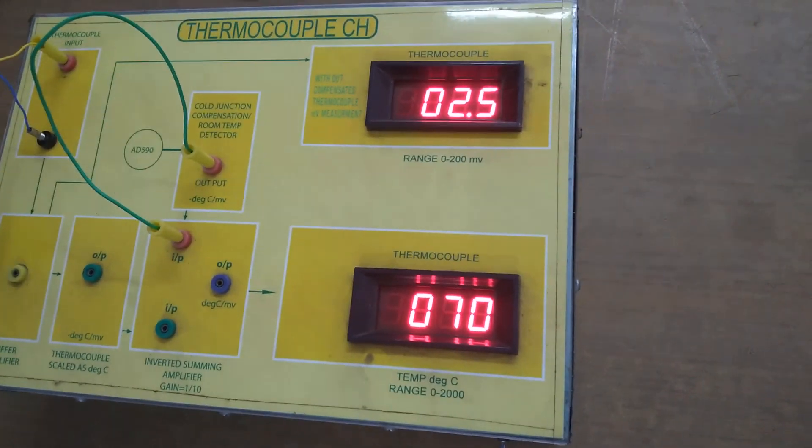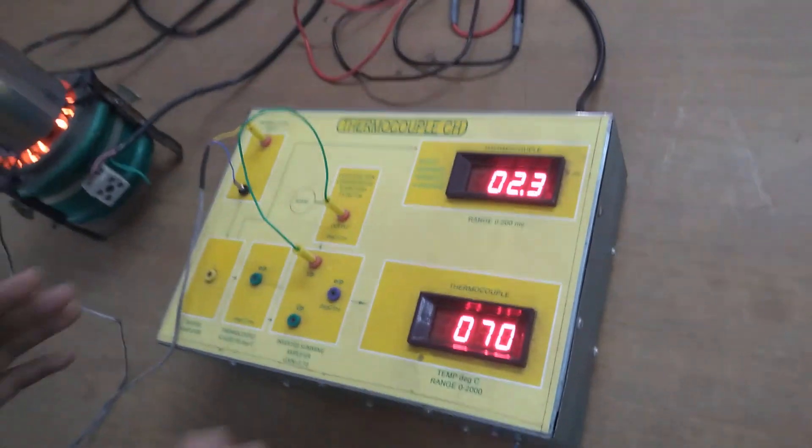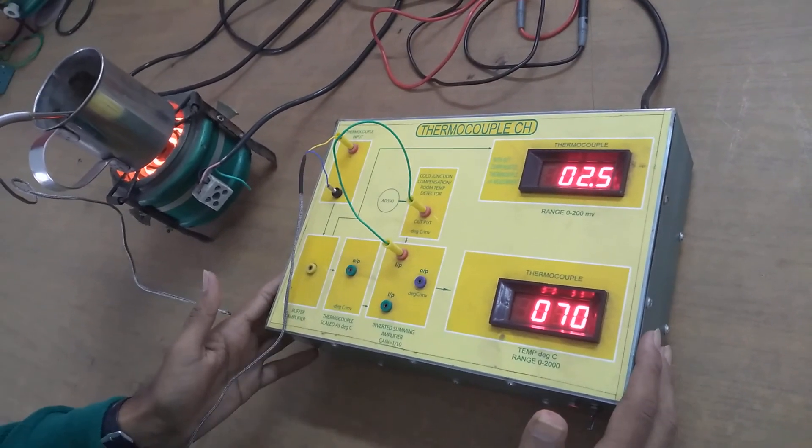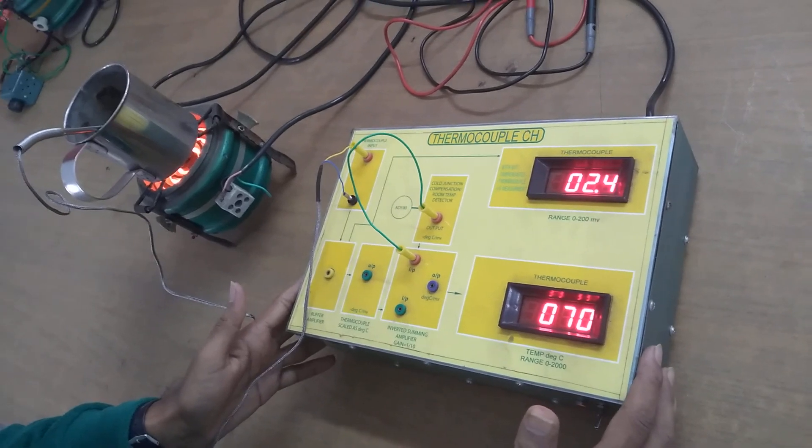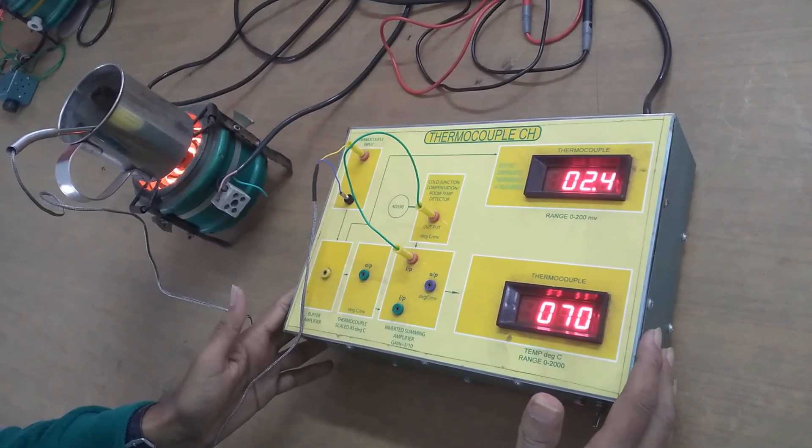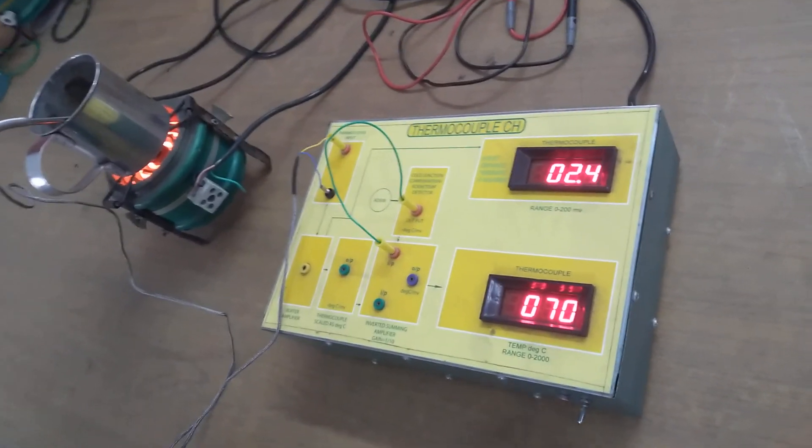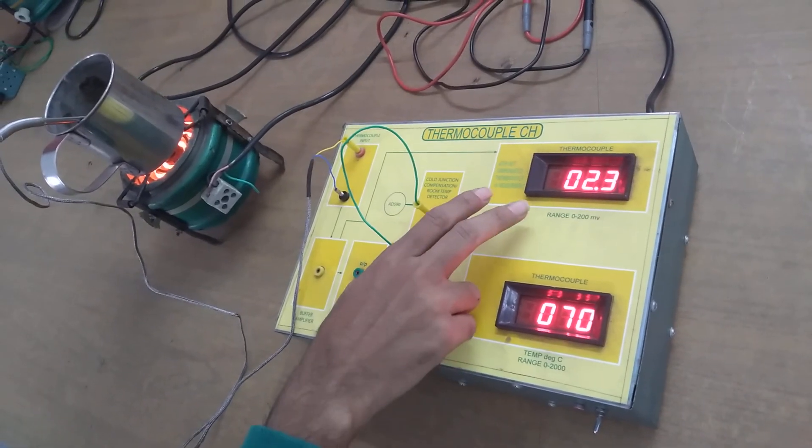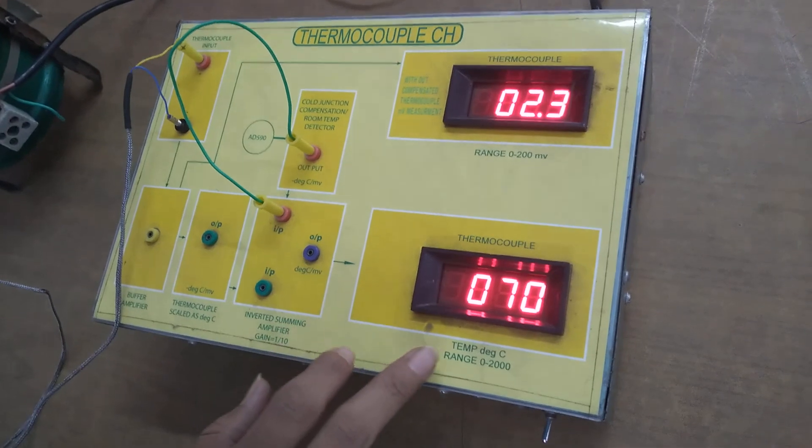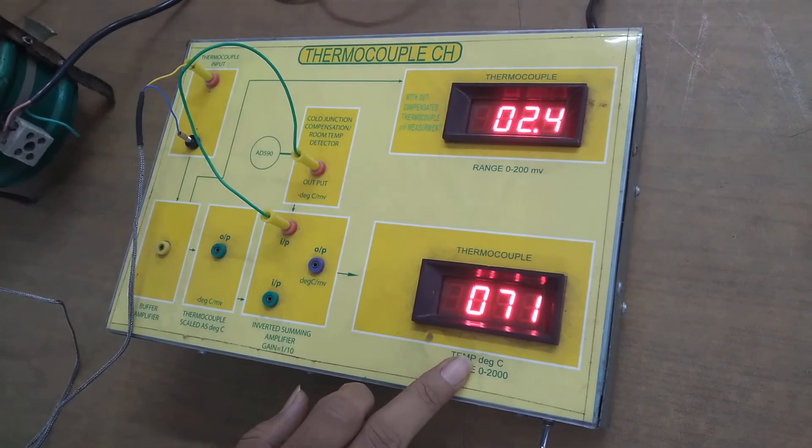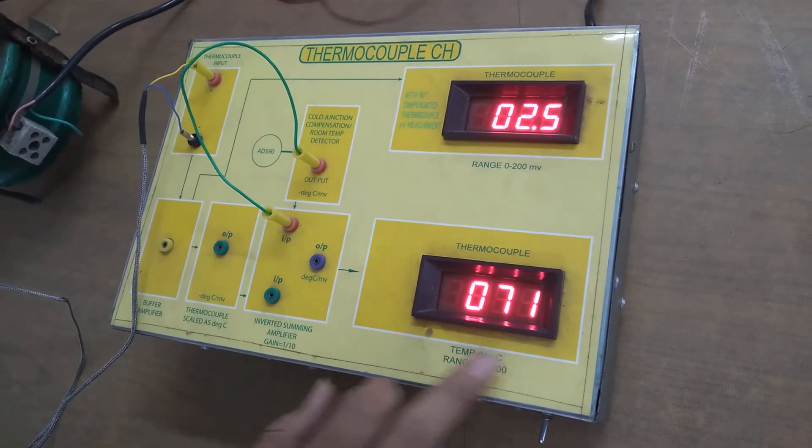The signal conditioning portion is inside this trainer kit and we will discuss about them in details and analyze the circuit in our subsequent videos. So you can see that this is around 2.5 millivolts and temperature has risen to 70 or 71 degree centigrade.